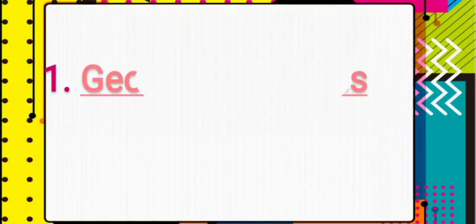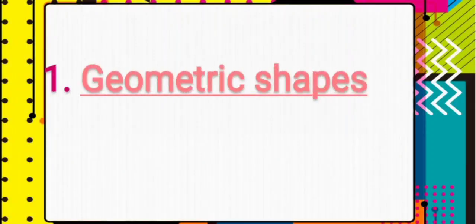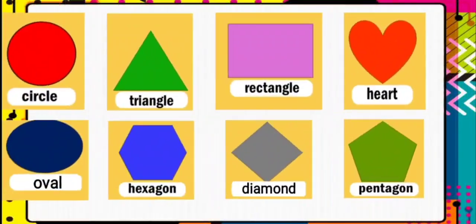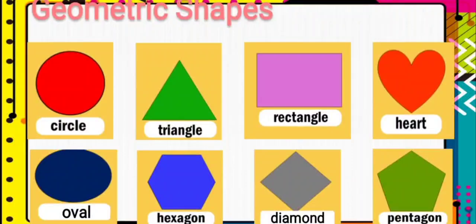What is a geometrical shape? Geometrical shapes have precise, defined edges and curves. Our examples of geometrical shapes are: circle, triangle, rectangle, heart, oval, hexagon, diamond, and pentagon.